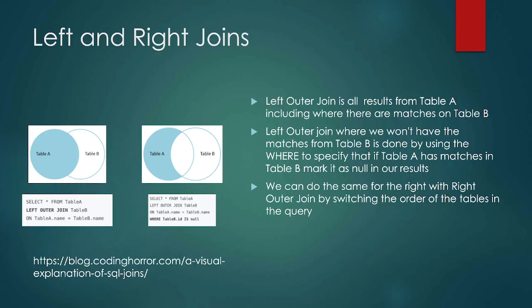For left and right joins: a left outer join is all the results from table A, including where there are matches from table B. With a left outer join where we don't have a match, we can use WHERE to specify that those should be marked as null. We can do the same thing for right outer joins. This is actually just about the order the tables are listed — if we did SELECT everything FROM table A LEFT OUTER JOIN table B, we could switch it to SELECT everything FROM table B LEFT OUTER JOIN table A to get table B's results, or use a right outer join.